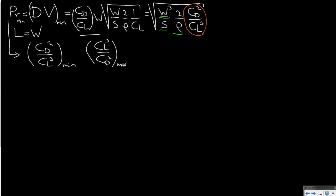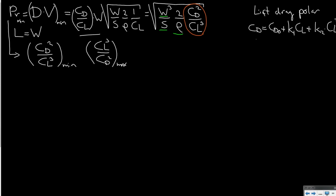We already know the relation between lift and drag represented by the lift-drag polar. That polar states that CD equals the zero-lift drag plus a constant K1 times CL plus another constant K2 times CL squared — a parabolic relation between CL and CD. This means CD is a function of CL, so the ratio CL³ over CD² is also just a function of CL.